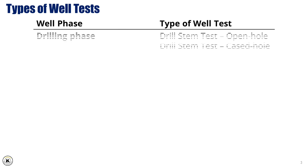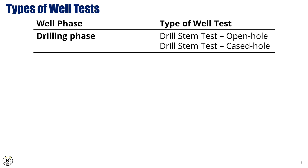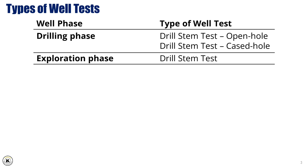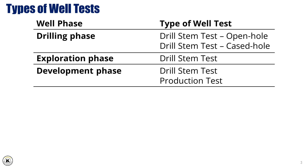During the drilling phase of a well, a drill stem test (DST) is commonly performed to evaluate the potential productivity of the reservoir. This test is conducted at different stages of the drilling process, depending on the well's objectives, and can be done either as an open hole DST or a cased hole DST. During the exploration phase, a DST is typically carried out to assess the presence of hydrocarbons and evaluate the reservoir's potential, helping determine if the well is a viable candidate for further development. In the development phase, the well undergoes either a drill stem test or a production test depending on objectives — a DST provides more detailed reservoir characteristics, while a production test evaluates long-term production capabilities.